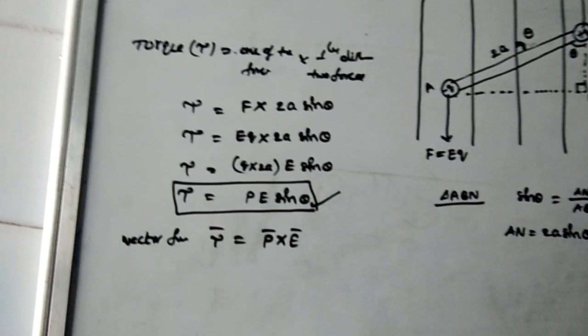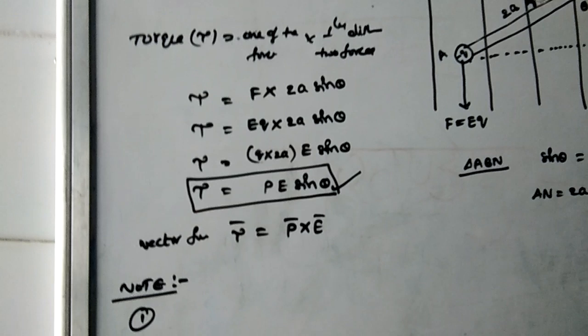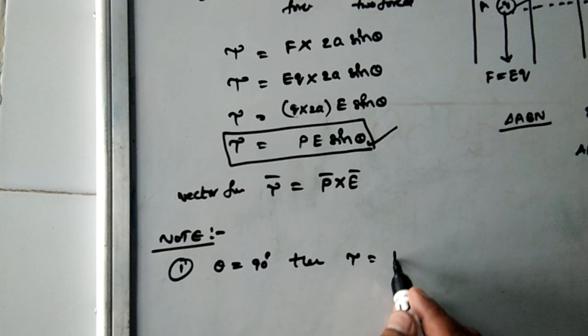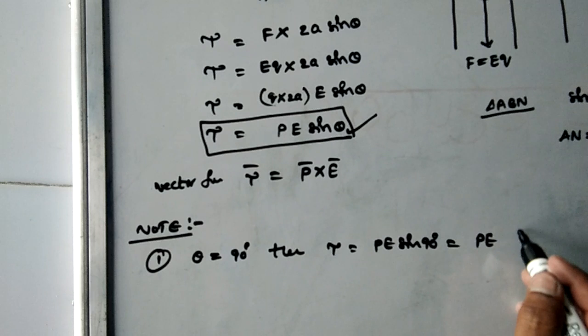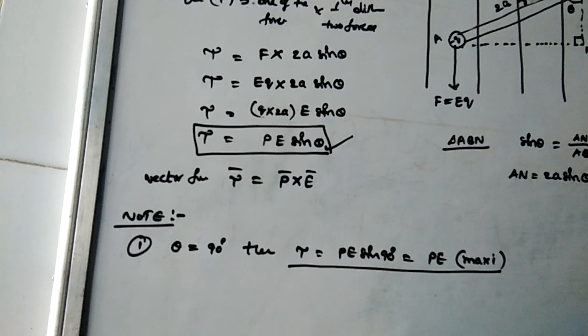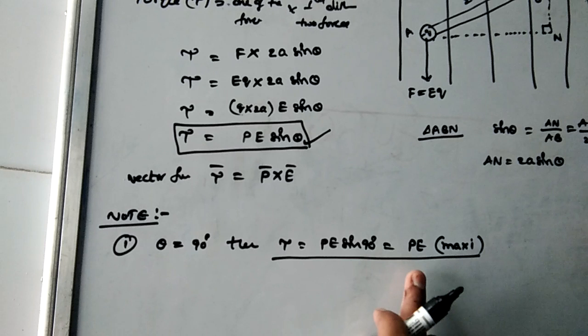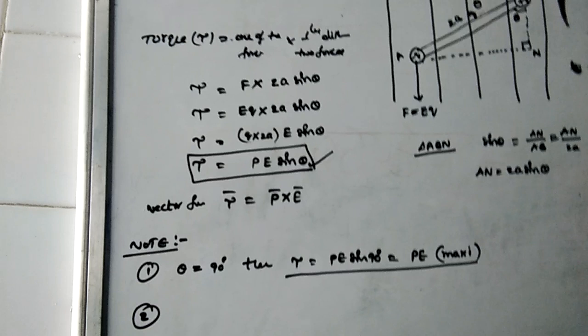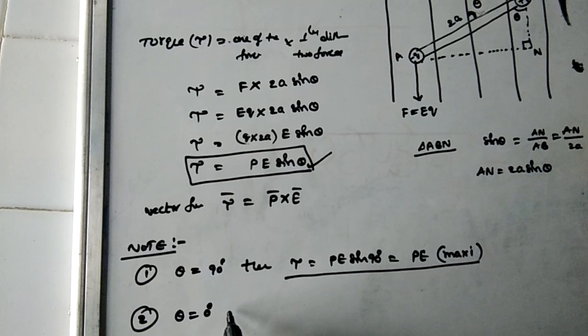Important note points: First, if the angle between the dipole moment and electric field theta equals 90 degrees, then tau equals P E sin 90° equals PE. This is the maximum torque, because the sine function is maximum at 90°. So maximum torque equals PE, occurring when the dipole moment is perpendicular to the electric field.